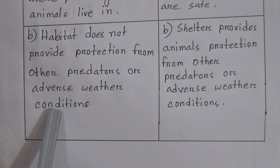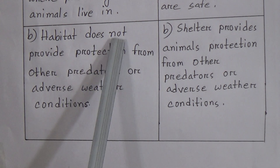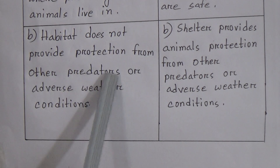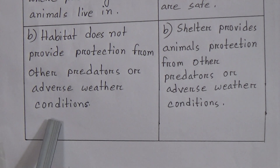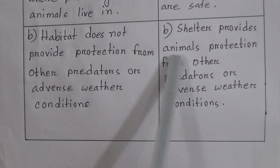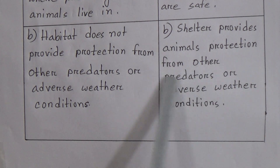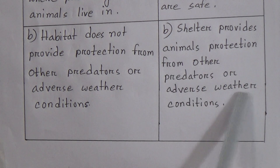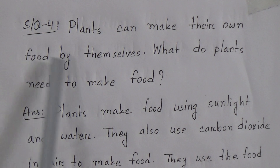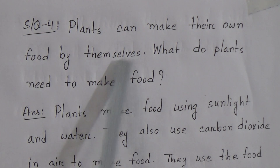Point b: A habitat does not provide protection from other predators or adverse weather conditions. A shelter, on the other hand, provides animals protection from other predators or adverse weather conditions.